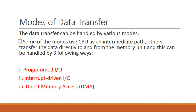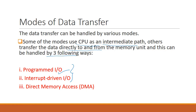Data transfer can be handled in various modes. Some modes use the CPU as an intermediate path, while others transfer data directly to and from the memory unit. This can be handled in three ways. The first two modes — programmed input-output and interrupt-driven input-output — use the CPU as an intermediate path. Direct memory access transfers data between the computer, external devices, and memory units without supervision of the CPU.